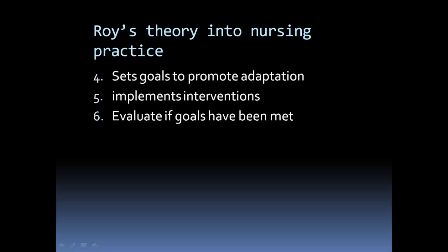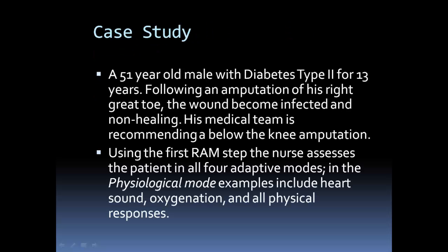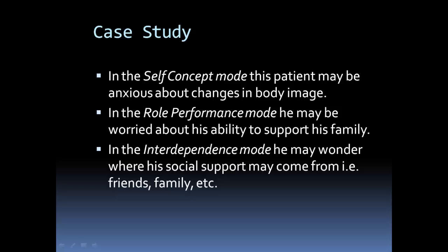A case study using this process: a 51-year-old male with type 2 diabetes for 13 years, following an amputation of his right great toe, the wound becomes infected and non-healing, and his medical team is recommending a below-the-knee amputation. Using the first step, the nurse assesses the patient in the four adaptive modes: physiological — heart sounds, oxygenation, wound condition; self-concept — anxiety about body image changes; role performance — worry about ability to support his family; and interdependence — where his social support will come from, whether family and friends will be there for him.